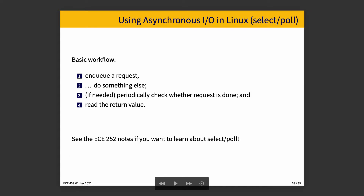With the select or poll workflow, you enqueue a request, do something else, periodically check whether a request is done, and then read the return values. There's more information about how select and poll work in the EC252 notes. Both select and poll are considered not great practice anymore because there are better tools available. LibEvent is probably available on Unix-like systems or Windows, and epoll is a somewhat better implementation than poll. But many systems still use select and poll. In either case, you're starting things and then waiting for sockets to be ready — it's complicated and arcane. There's a reason I said don't use select with curl.